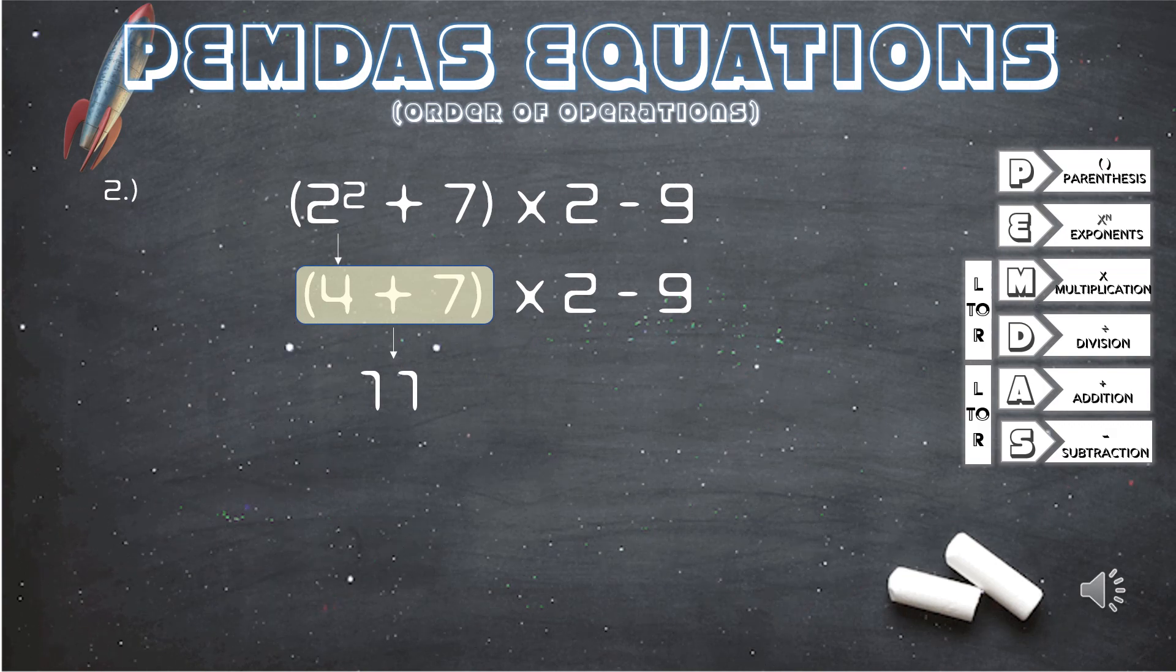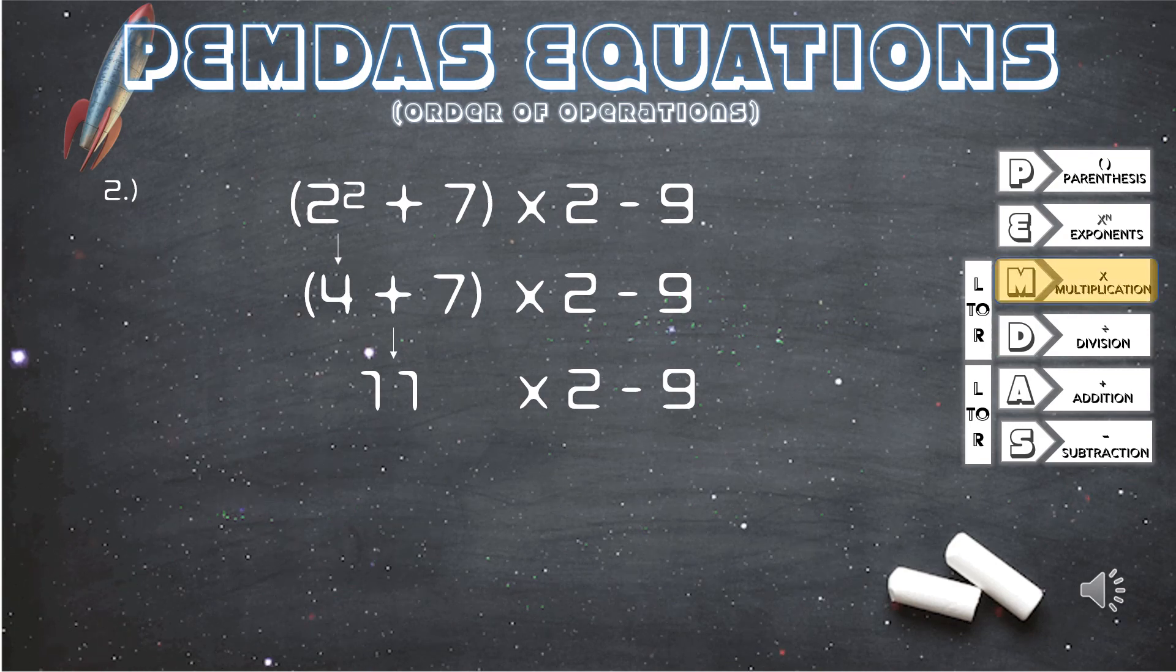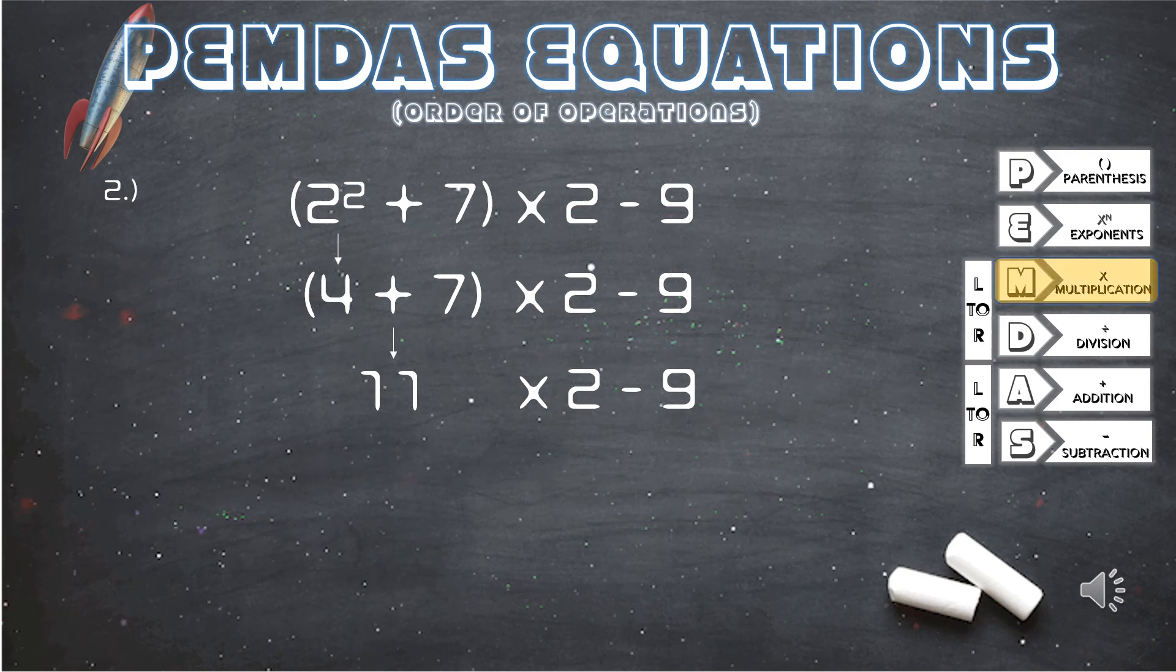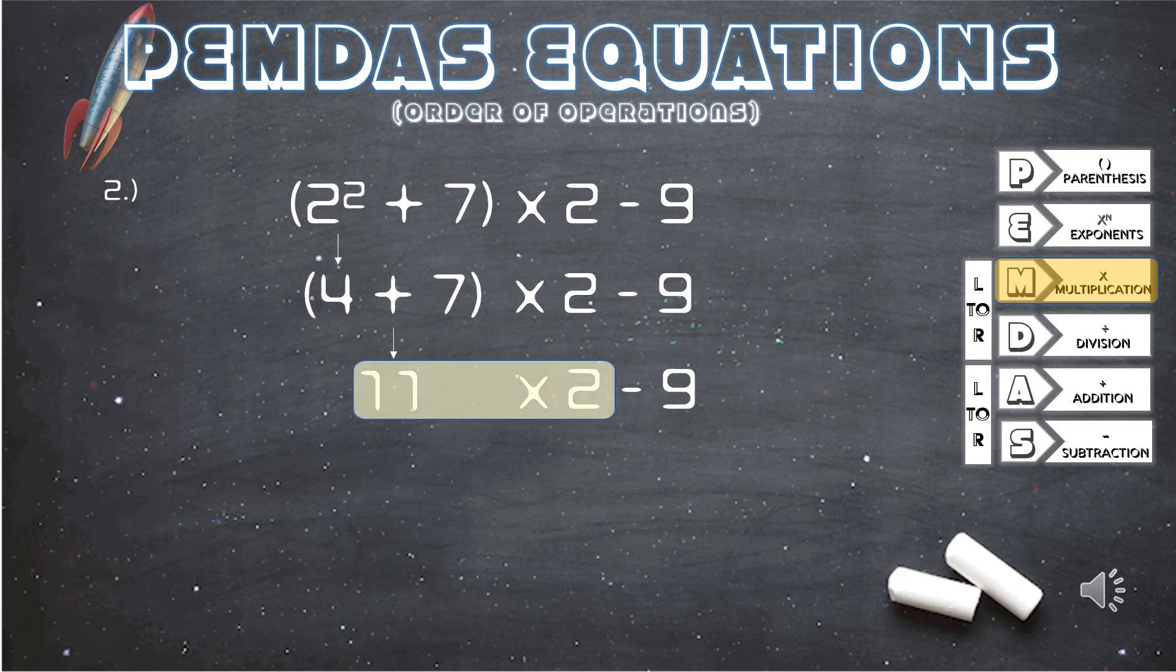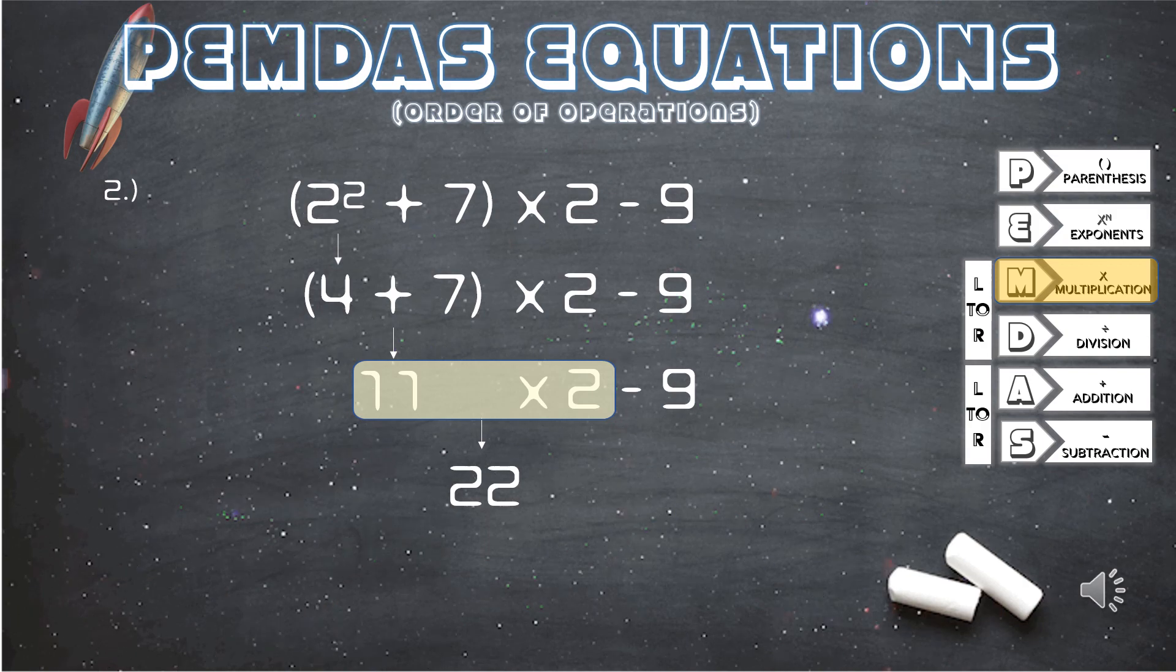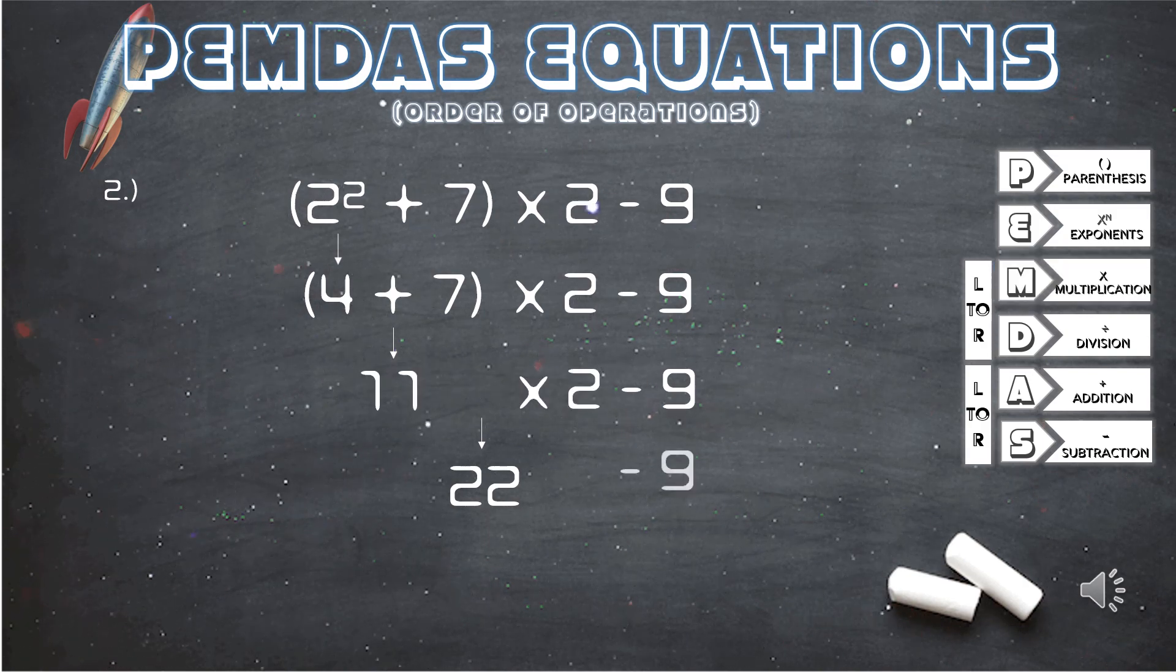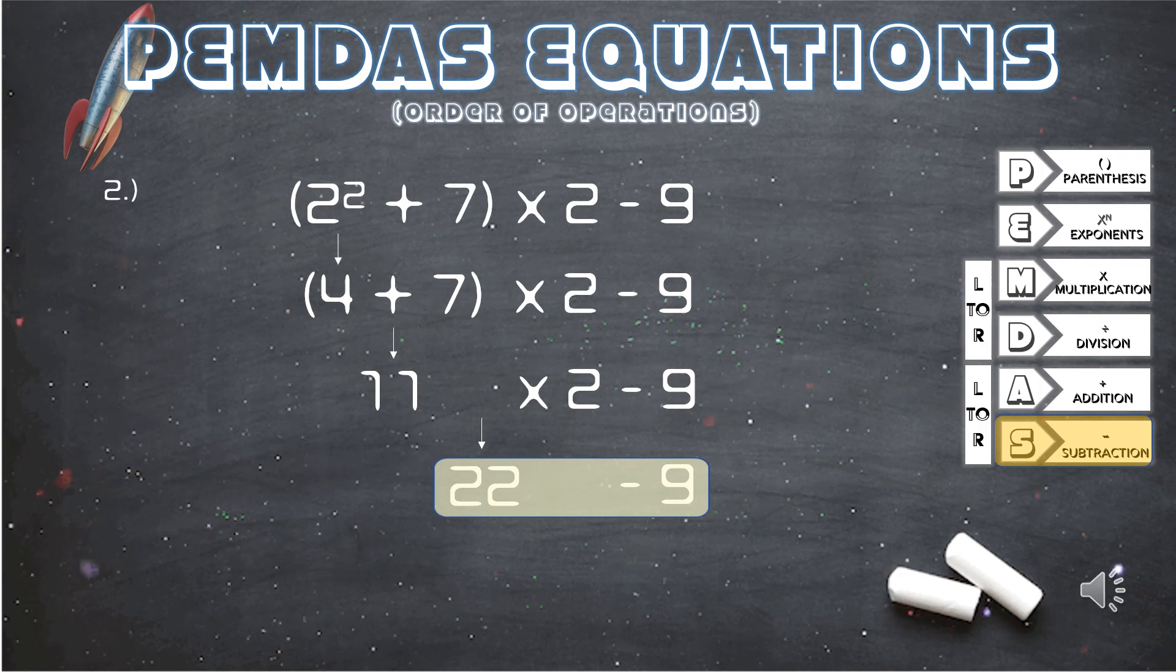We bring down the rest of the equation, check our PEMDAS guide, and we see multiplication comes before subtraction. So now the next step is to solve 11 times 2. That gives us 22. We bring down the 9, and we are left with 22 minus 9, bringing our answer to 13.